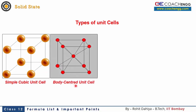Then there is the body-centered unit cell. Atoms can be placed at the eight corners, and one atom is placed at the body center of the cube — at the point of intersection of the body diagonal.